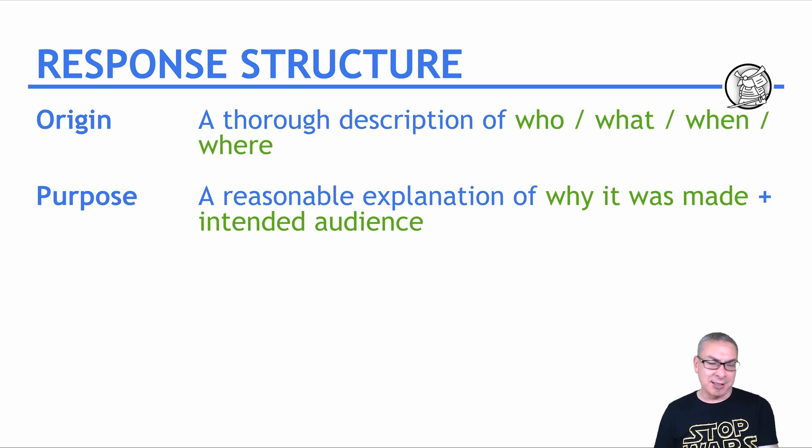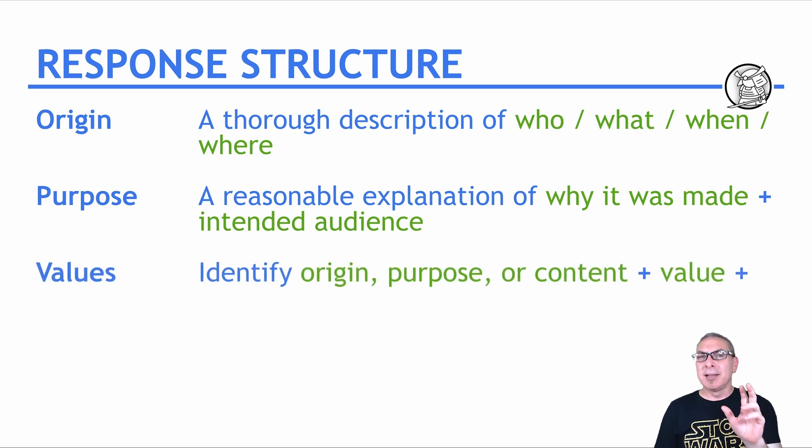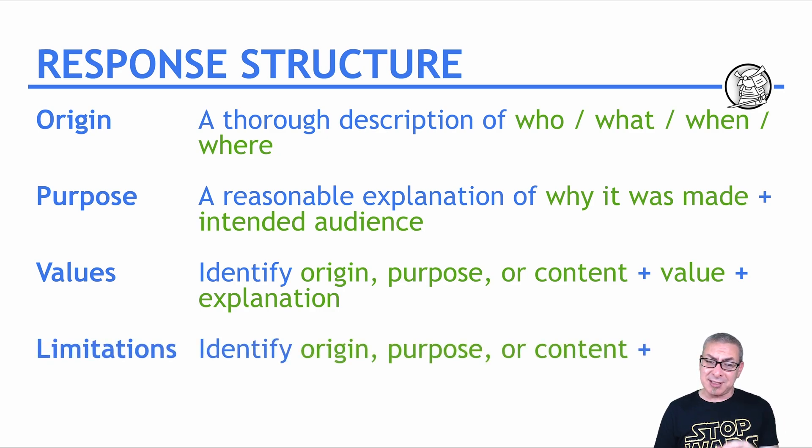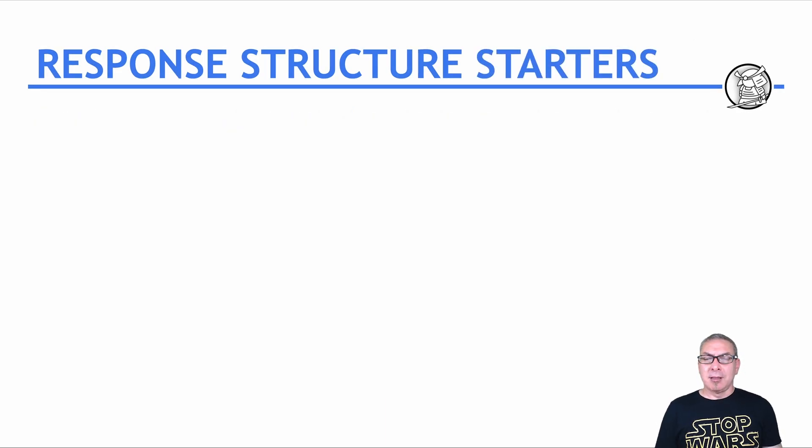The purpose, you have to give a reasonable explanation of why it was made and the intended audience, right? Who are they writing this or making this for? With the values, you want to identify an origin or purpose or content plus a value and why it's a value. Give it that explanation. And same thing for the limitations. Identify a limitation in the origin, purpose, or the content and say it's a limitation and give your explanation.